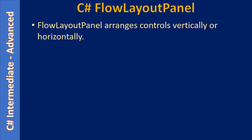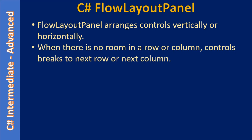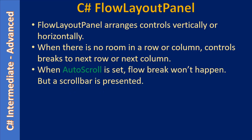FlowLayoutPanel arranges controls vertically or horizontally. When there is no room in the current row, the next control will automatically move to the next row. Similarly, when controls are arranged from top to bottom and there is no room in the current column, the control automatically moves to the next column. When the AutoScroll property is set, a flow break won't happen — instead a scroll bar will be presented.